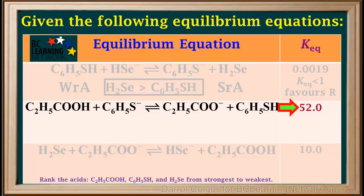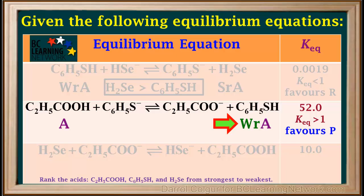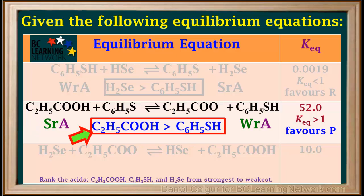Now we'll look at the KEQ value for the second reaction. We see that it's 52, so KEQ is greater than 1, which means equilibrium favors the products. Now we identify the two acids. C2H5COOH on the left has one more proton than C2H5COO⁻ on the right, so C2H5COOH is the acid on the left. And C6H5SH on the right has one more proton than C6H5S⁻ on the left, so C6H5SH is the acid on the right. Equilibrium favors the side with the weaker acid, and we know this equilibrium favors the products. Therefore, the weaker acid is C6H5SH, which means the stronger acid of these two is C2H5COOH. So C2H5COOH is stronger than C6H5SH.